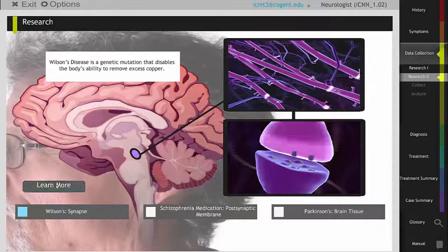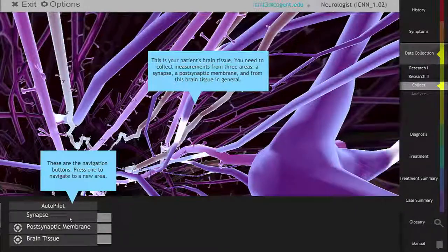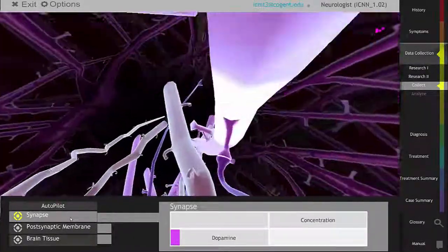Students then learn about three issues which affect the synaptic transmission of dopamine: Wilson's disease, Parkinson's, and medication for schizophrenia.